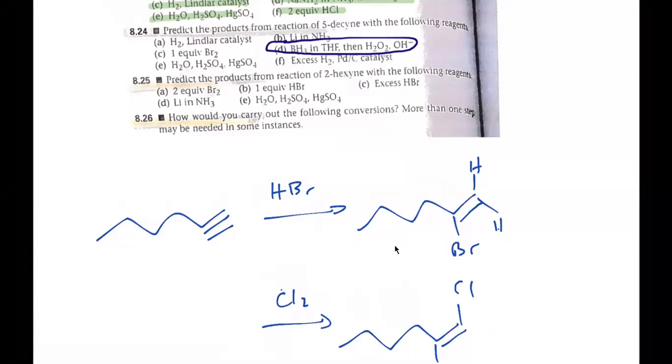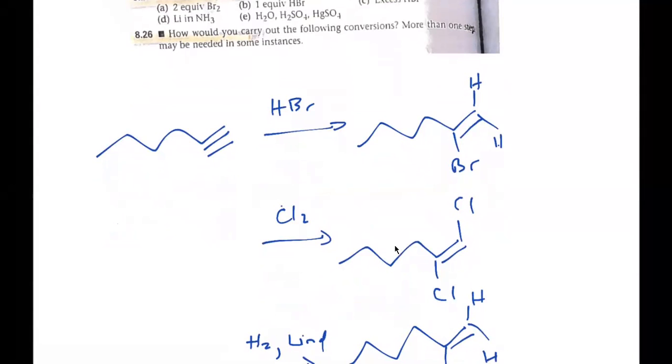And then the second one, adding Cl2, it follows the same rules as you would if you were adding it to an alkene, right? You add chlorine, you go through an intermediate, and the chlorines add trans to one another.